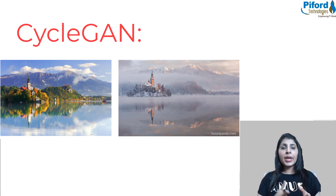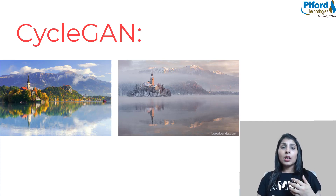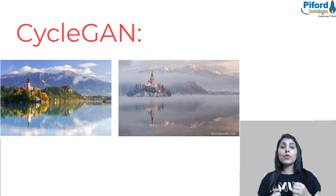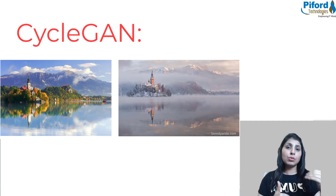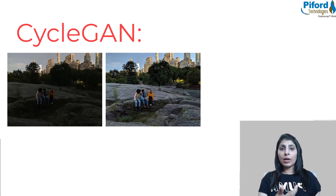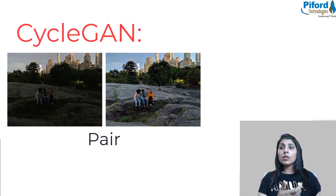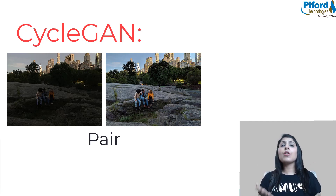Before CycleGAN, there were other models that could perform image-to-image translation, but those models used datasets in the form of pairs. For example, if you want to do night-to-day translation, you need a paired image — both the night and the daytime version of one particular image. But CycleGAN does not require a dataset in the form of paired images, so you don't need a training dataset with pairs of these images.